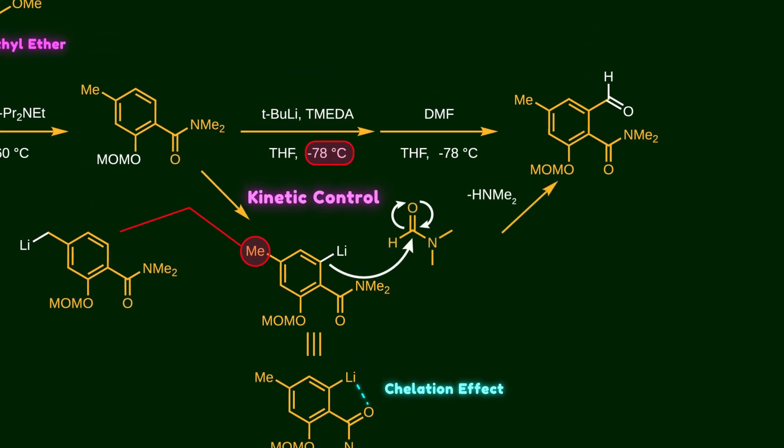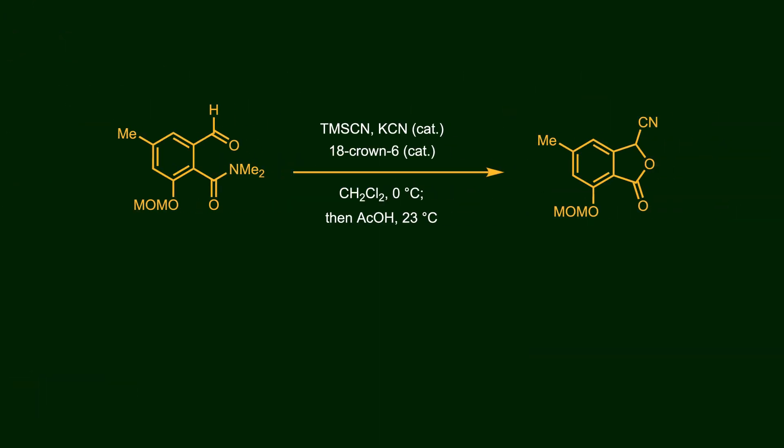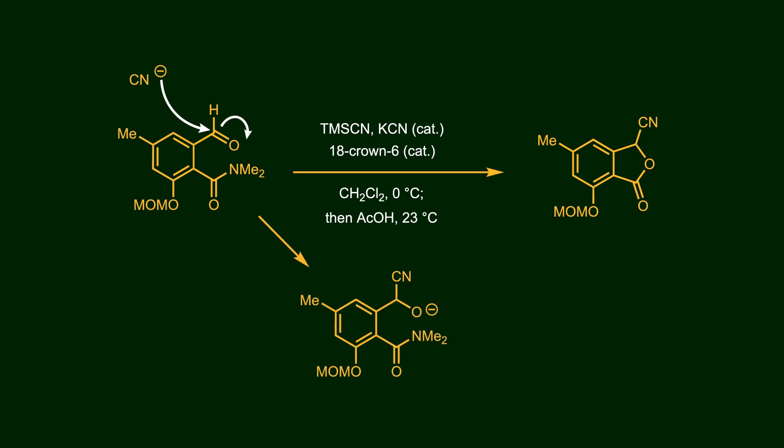After adding DMF, it reacts with the lithiated intermediate. You might think the amide bond is very stable, but the lithiated intermediate is strong enough to attack the carbonyl group of DMF, which leads to the formation of the aldehyde group. After that, the cyanide ion attacks the aldehyde, and the oxygen atom of the aldehyde attacks the amide bond, kicking off dimethylamine and forming the cyanophthalide.